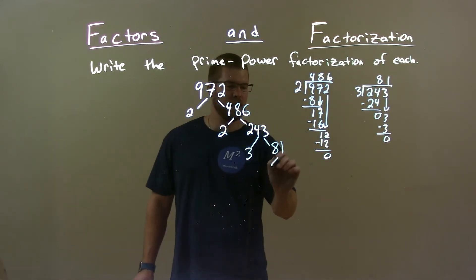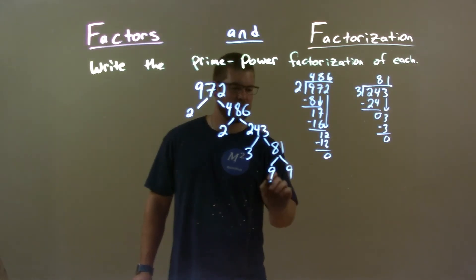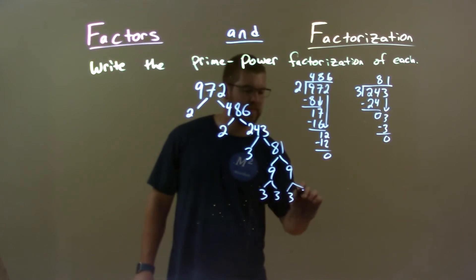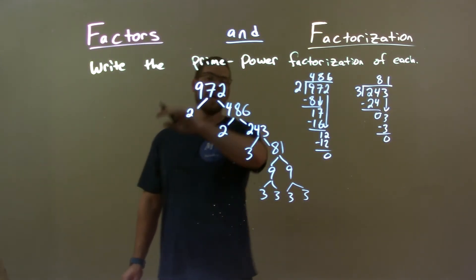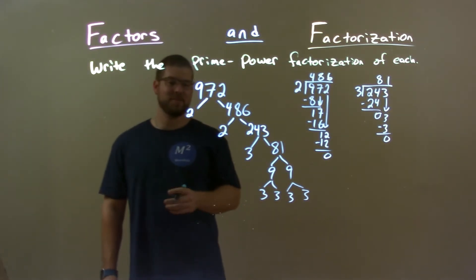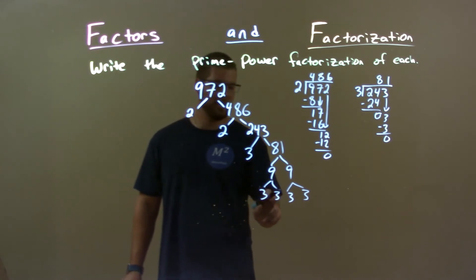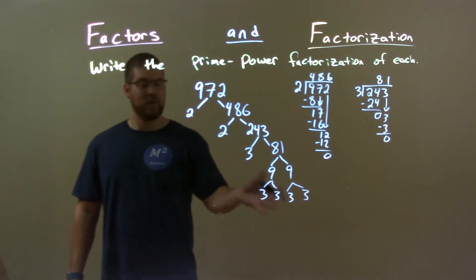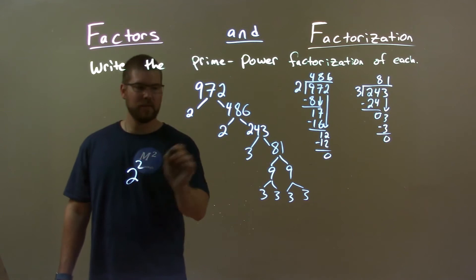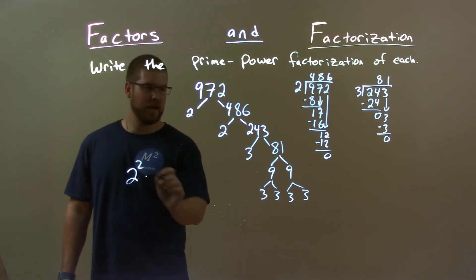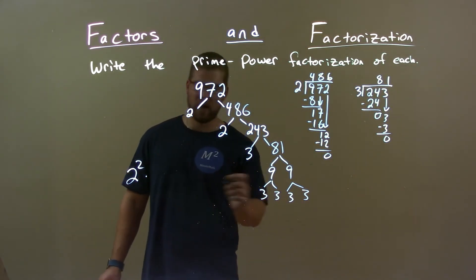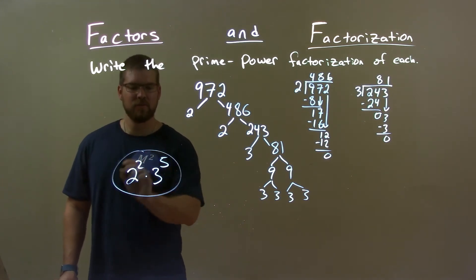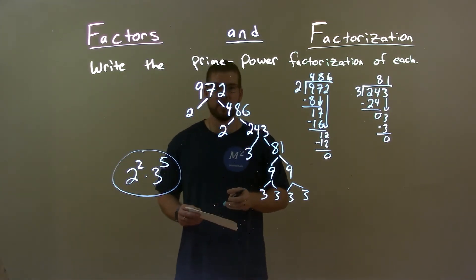81 we know is nine times nine, and each nine is three times three. So 972 is two times two times three times three times three times three times three. We can bring that together: two squared — that's the two twos — times three to the fifth power, counting five threes. Our final answer is two squared times three to the fifth power.